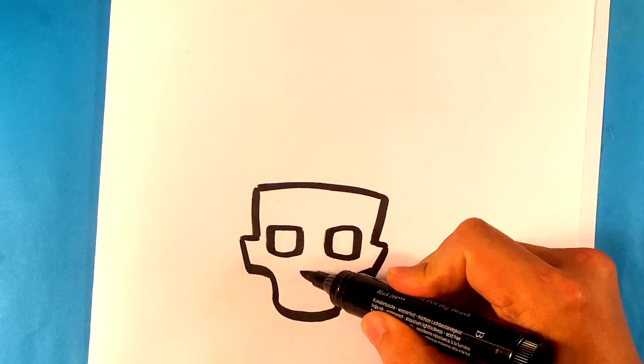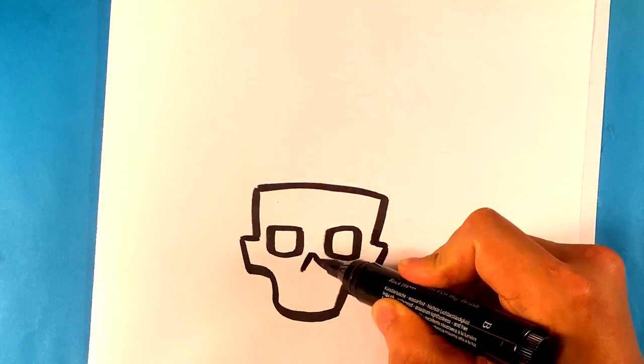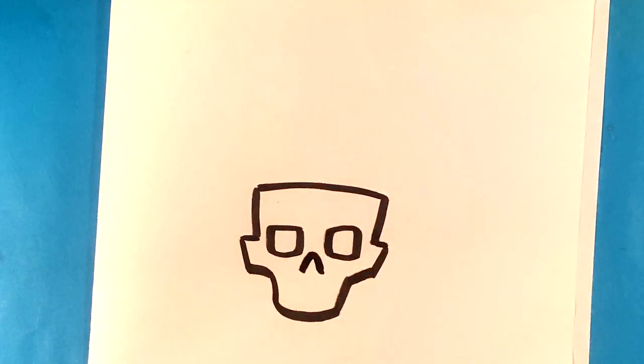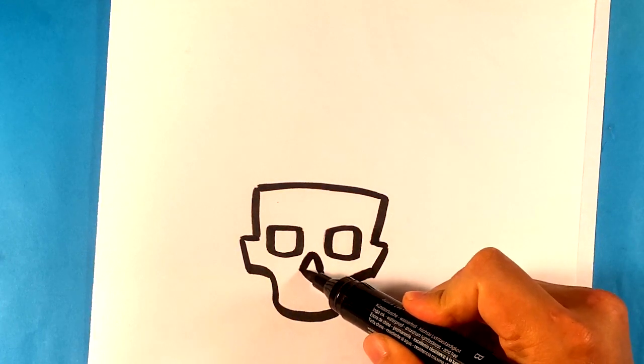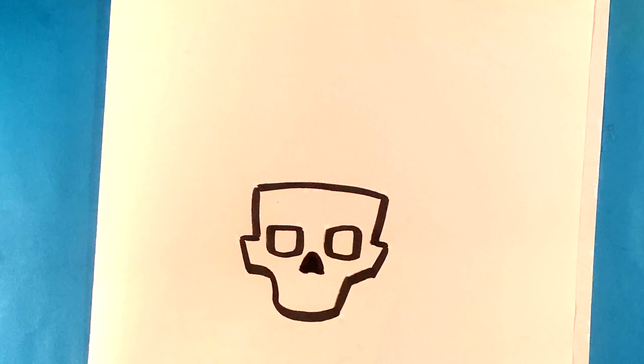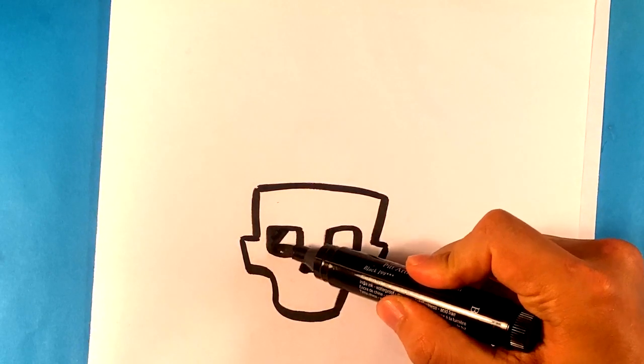Go in here for the nasal cavity, and that's really gonna be more or less just a triangle. And you could either close that off in many different ways. You could do a little arch, you could just do straight across. I'm gonna fill that in. And I'm also gonna fill in the eyes here.